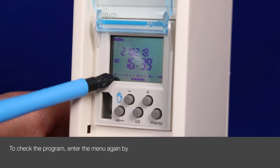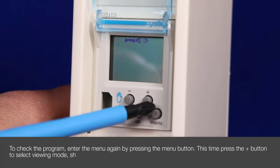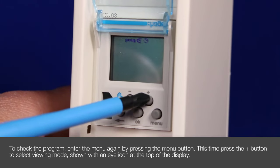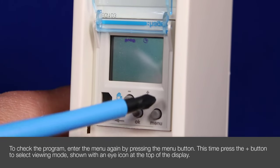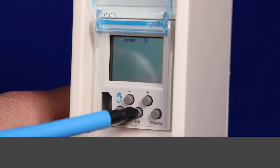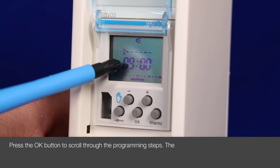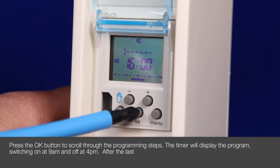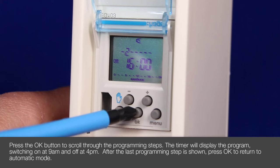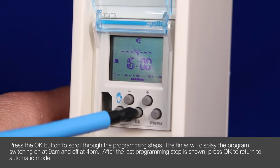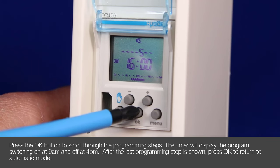Should we wish to check this we can select the menu but this time with the plus button select the viewing mode which is the symbol looking like an eye. Repeatedly pressing the OK scrolls through this program and you can see the on comes on at 9 o'clock. The off at 4 o'clock and scrolling through the whole program at the end returns to auto mode.